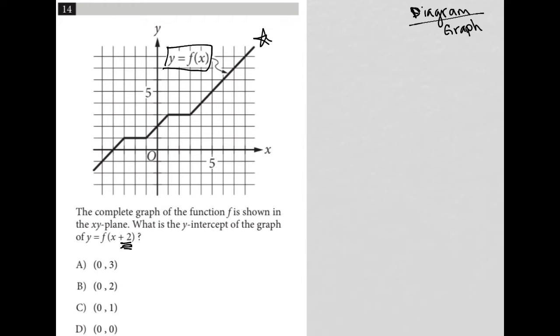So the plus 2 obviously has some significance. That plus 2 shifts our graph to the left, 2 units. So I'll write it over here: y equals f of x plus 2. We get a 2-unit left shift.